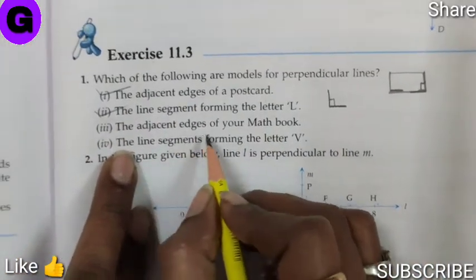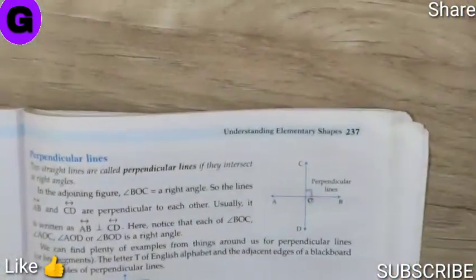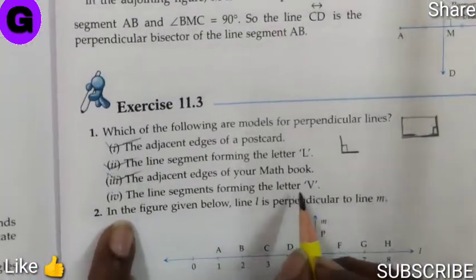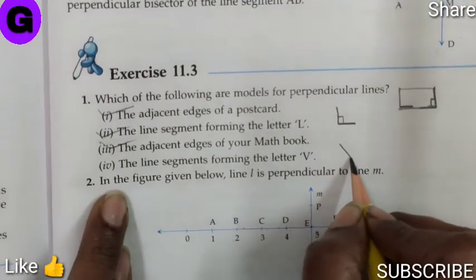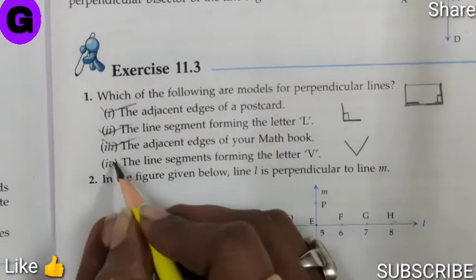The adjacent edges of your math book. As you can see the corners, they are forming a 90 degree. This is also true. The line segments forming the letter V. Now this is V. Are they forming 90 degree? No.